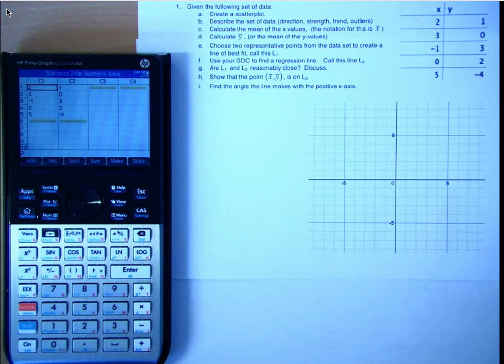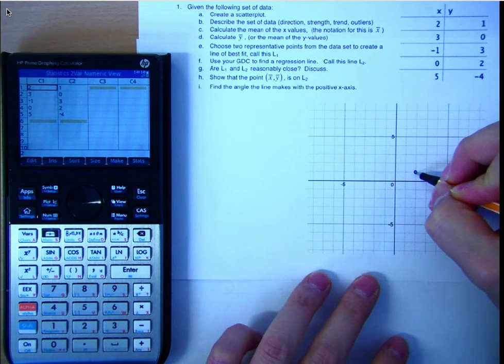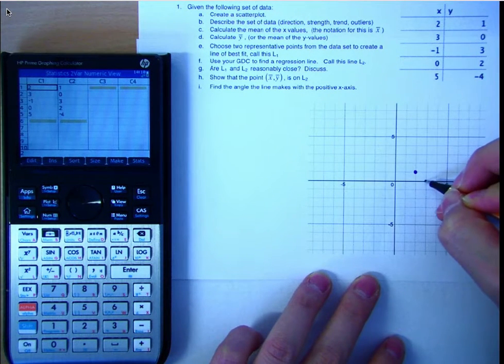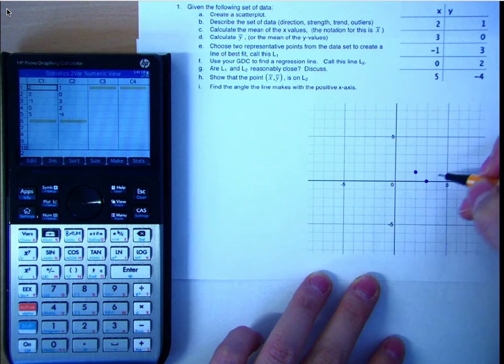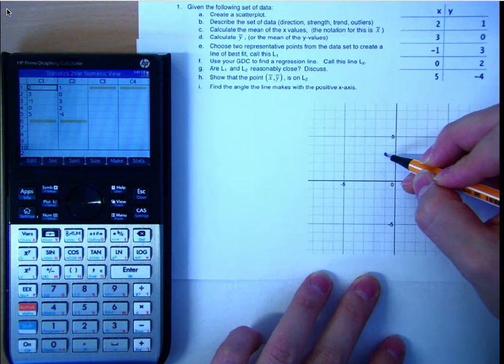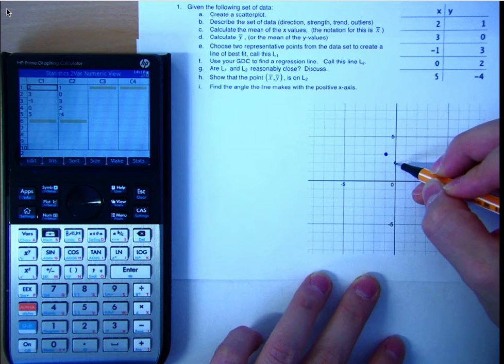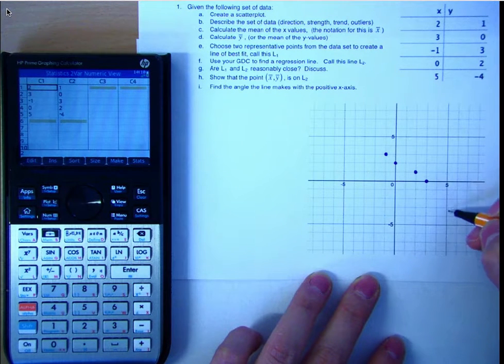So first, a simple scatter plot with the x value 2, y value 1, and then 3, 0, negative 1, positive 3, 0, 2, and 5, negative 4.